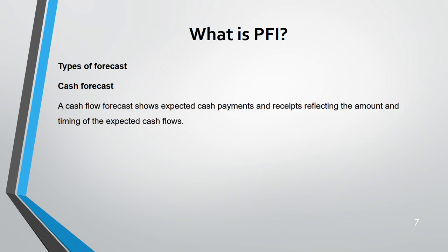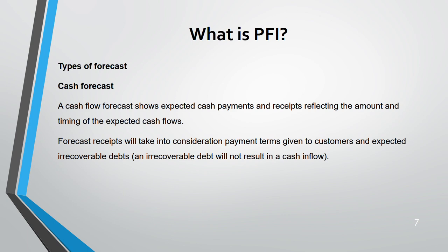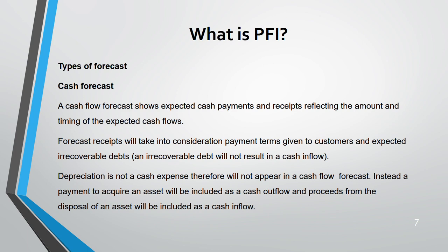The second type is a cash flow forecast, based on expected payments and receipts on a cash basis. Cash receipts take into consideration payment terms given to customers and expected irrecoverable debts, since irrecoverable debts will not result in any cash inflow. Depreciation is excluded from a cash flow forecast because it is not a cash expense — it impacts profit, not cash. Payments to acquire assets and proceeds from disposal of assets are included as cash flows.